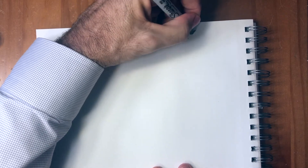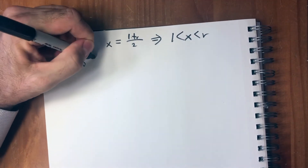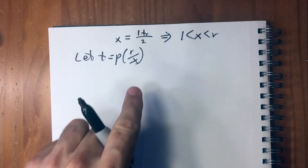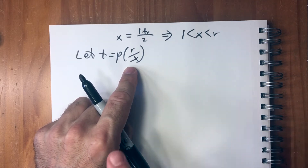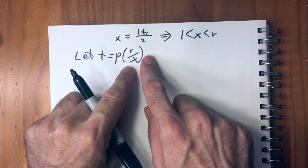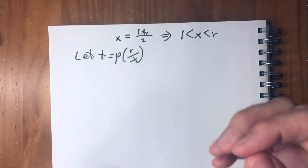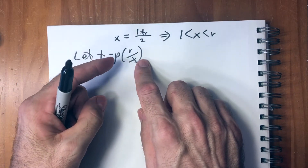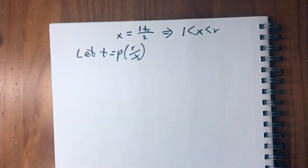So we have x equals one plus r divided by two, meaning one is less than x is less than r. Now let t equal p times r divided by x. This is more complicated than it was with addition, but the reason is that when we go through the math, we want to show that t is in beta, so we need to multiply by something that allows us to get rid of the extra x and show that t is also in beta.